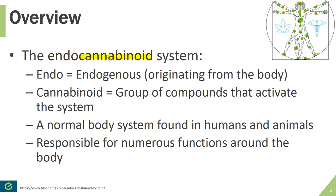The second portion of this word is cannabinoid. A cannabinoid essentially refers to a group of compounds that activate the endocannabinoid system. These can be compounds found within the body naturally or ones produced outside of the body — something we'll be talking about more in just a couple of slides. One important thing to take away is that the endocannabinoid system is a normal body system, found in both humans and animals, present from birth, and responsible for a number of functions around the body.